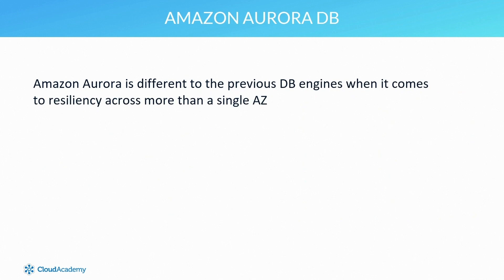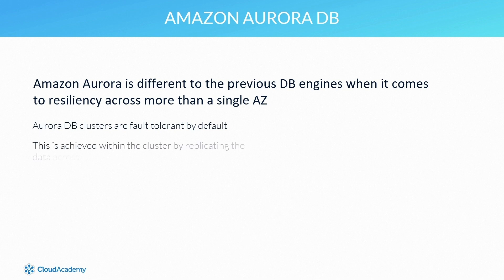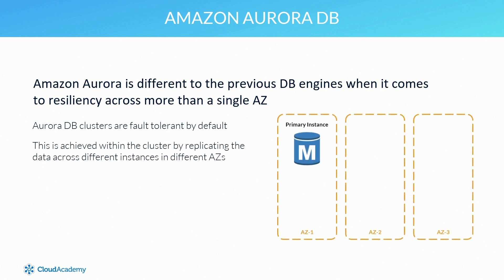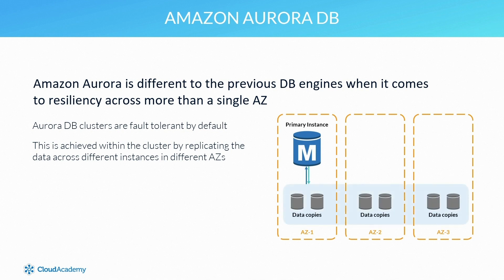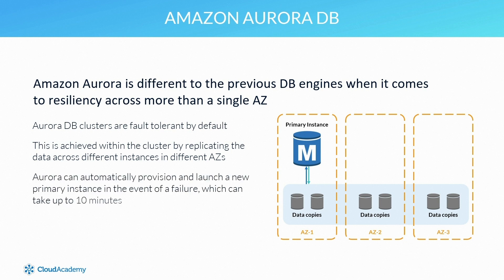Amazon Aurora is different from the previous database engines when it comes to resiliency across more than one availability zone. By default, Amazon Aurora DB clusters are fault tolerant, designed to withstand the complete failure of an availability zone. This is achieved by copying and replicating data across different instances in different AZs within a single region. Should a failure occur of the primary instance, Aurora can automatically provision and launch a new primary instance, however this process can take up to 10 minutes.